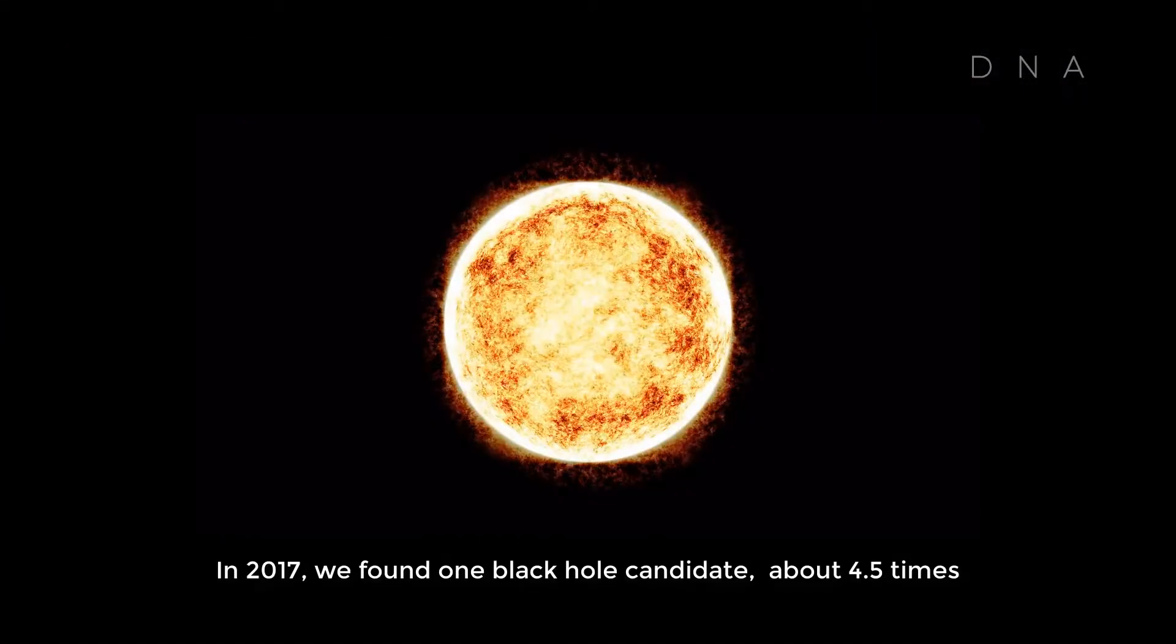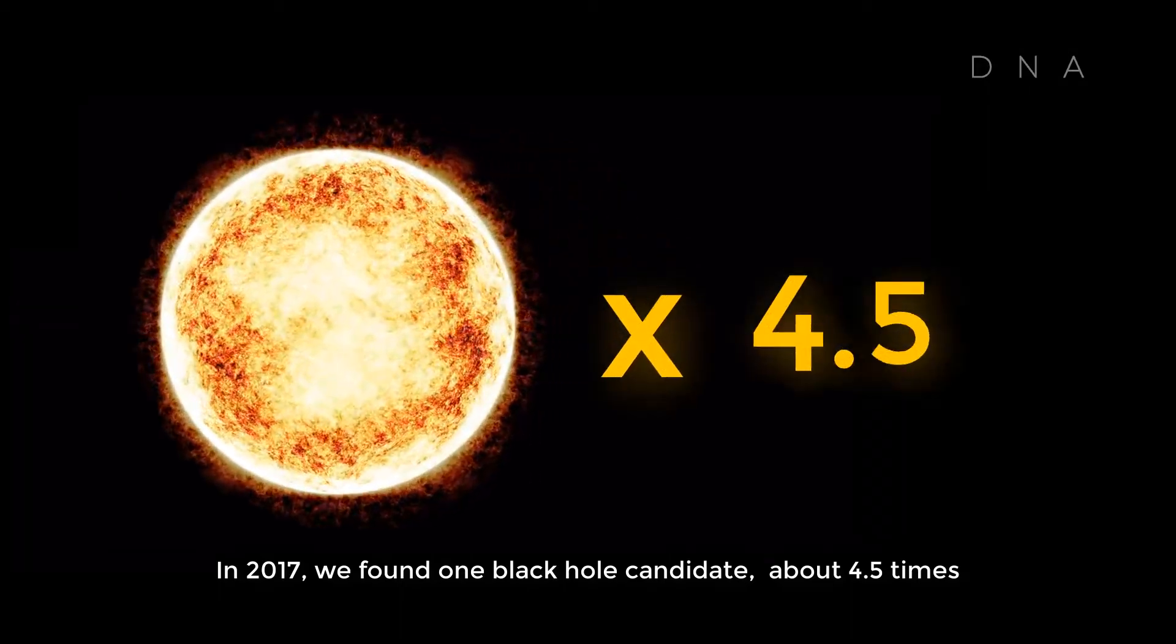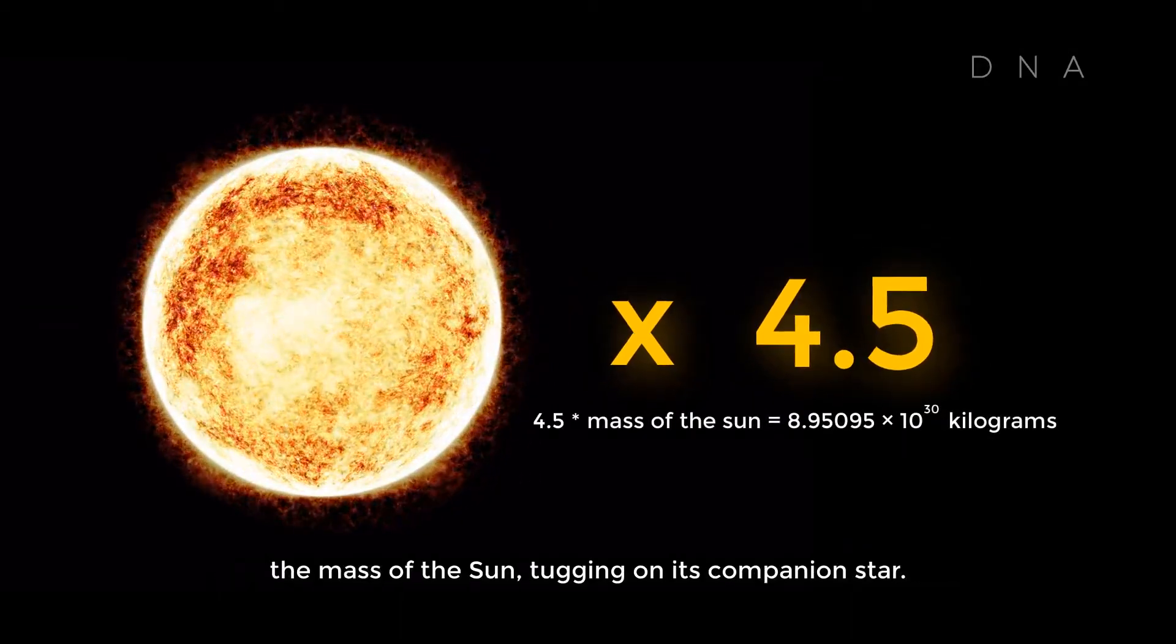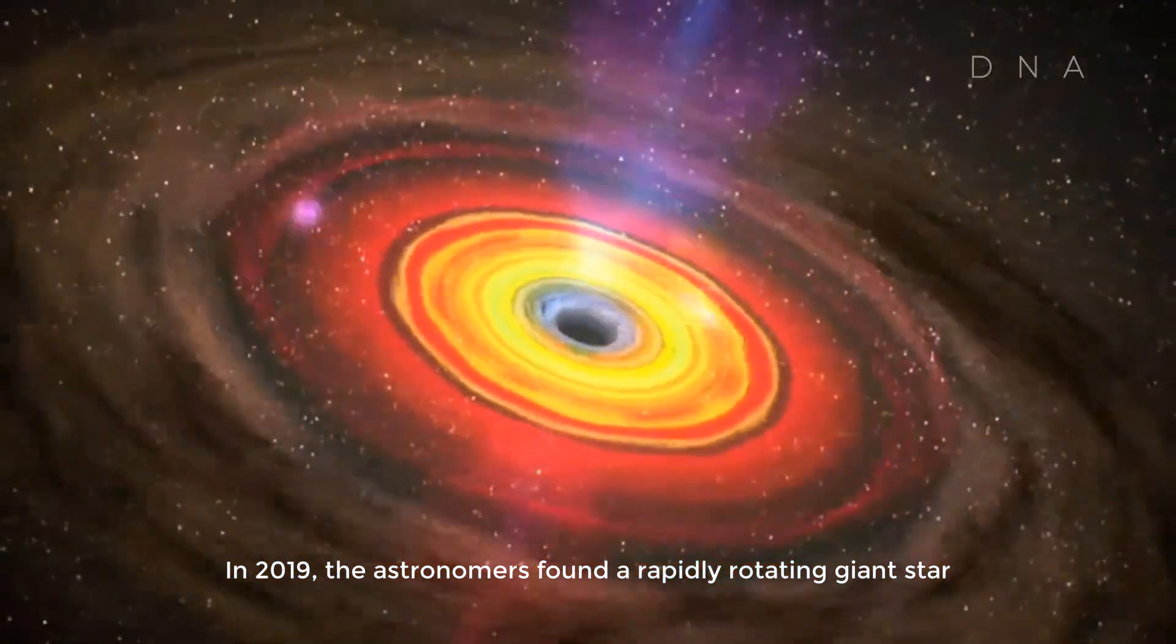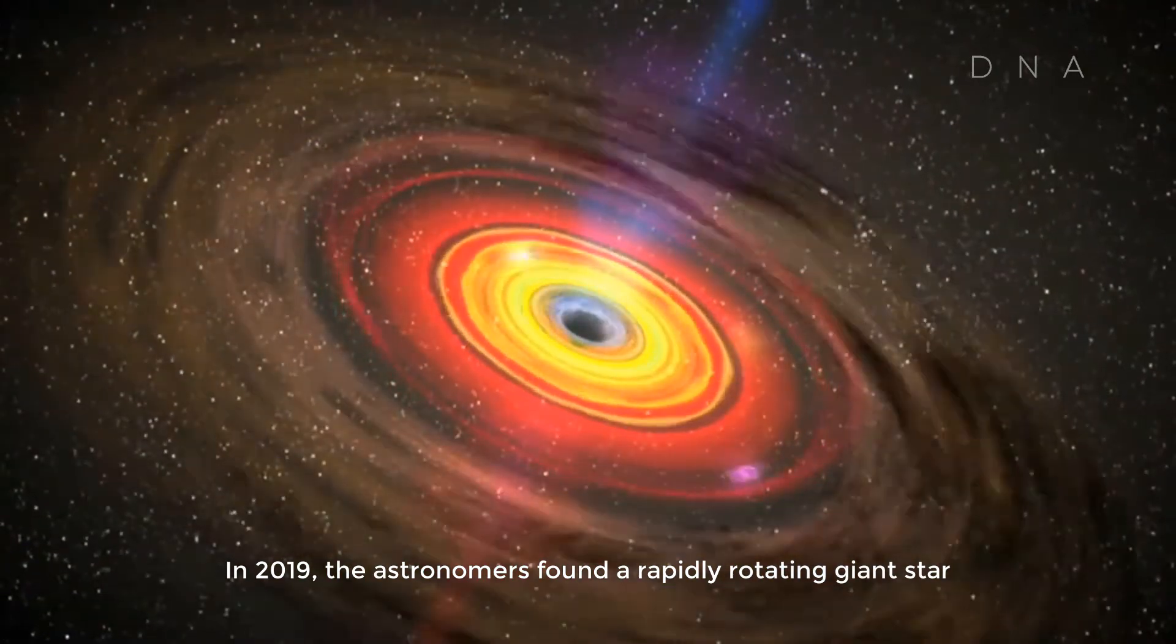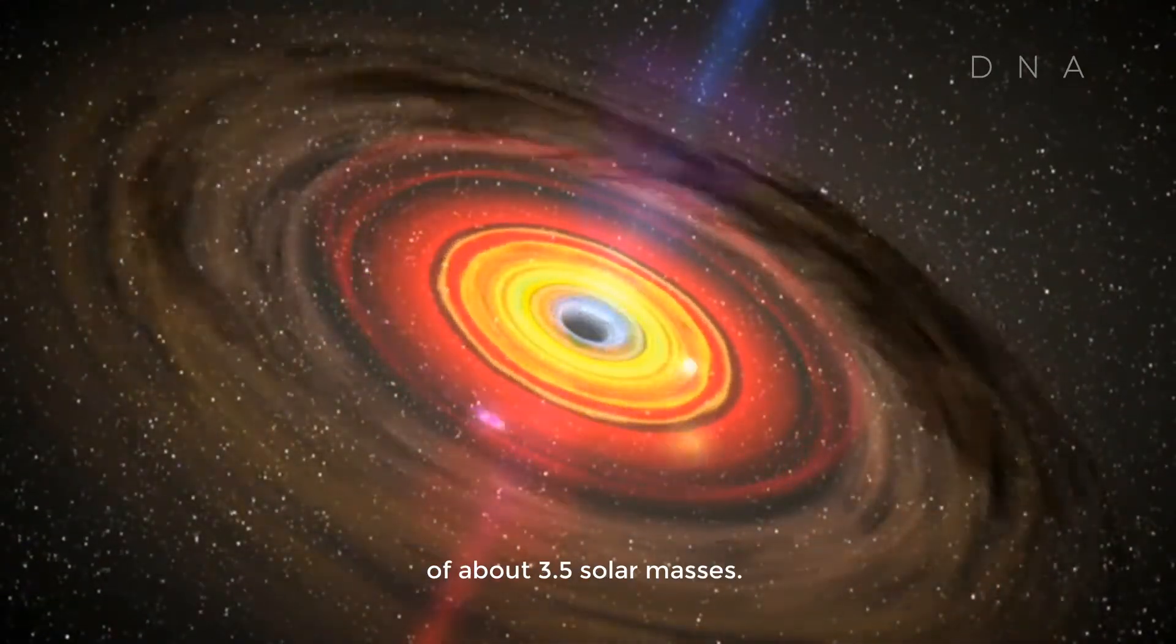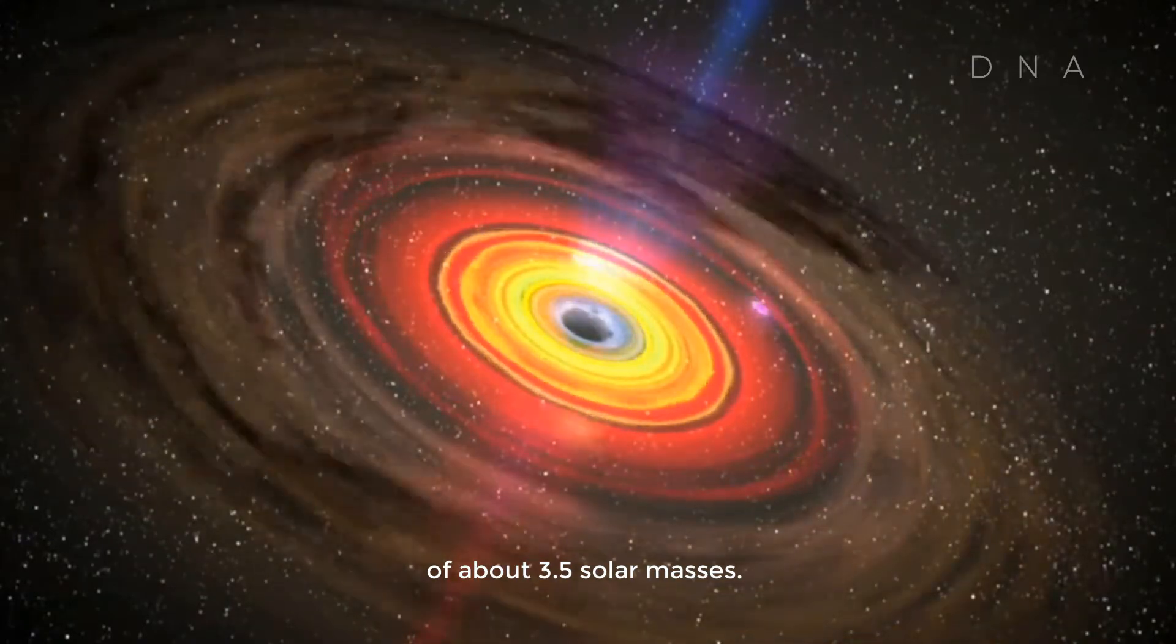In 2017, we found one black hole candidate, about 4.5 times the mass of the Sun tugging onto its companion star. In 2019, the astronomers found a rapidly rotating giant star which forms its wobbles indicating a black hole companion of about 3.5 solar masses.